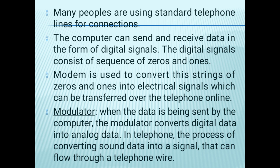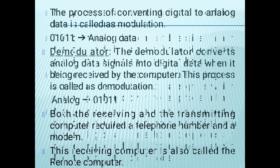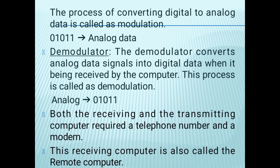A modem is used to convert listings of zeros and ones into electrical signals which can be transferred over the telephone line. The modulator converts digital data into analog data — this is the process of converting digital to analog data, called modulation.